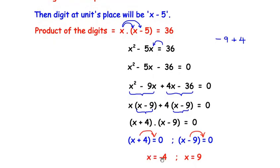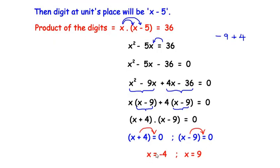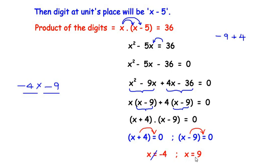Now x cannot be equal to negative 4, because we have a tens place and a units place. If the tens digit were negative 4, then the units digit would be five less, that is negative 9, and we cannot write a two-digit number with negative digits. So we discard x equals negative 4.